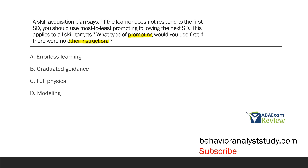Remember, we're only using the information given to us in the question. We know the plan says if the learner does not respond to the first SD, then we're going to start prompting and we're going to use most to least prompting. Most to least prompting involves going from a more intrusive prompt to a less intrusive prompt. If we consider that a hierarchy or a scale, the least intrusive prompt you can provide is no prompt — just let the learner engage without a prompt.